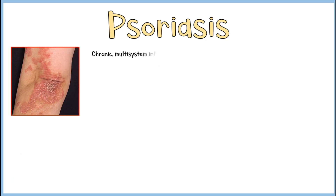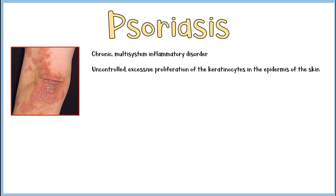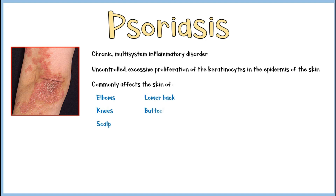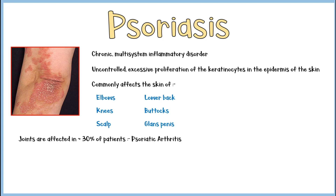Psoriasis is a chronic, multi-system inflammatory disorder, characterized by uncontrolled excessive proliferation of the keratinocytes in the epidermal layer of the skin. It commonly affects the skin of the elbows, knees, scalp, lower back, in between the buttocks, and glans penis. In about 30% of patients, the joints are also affected.